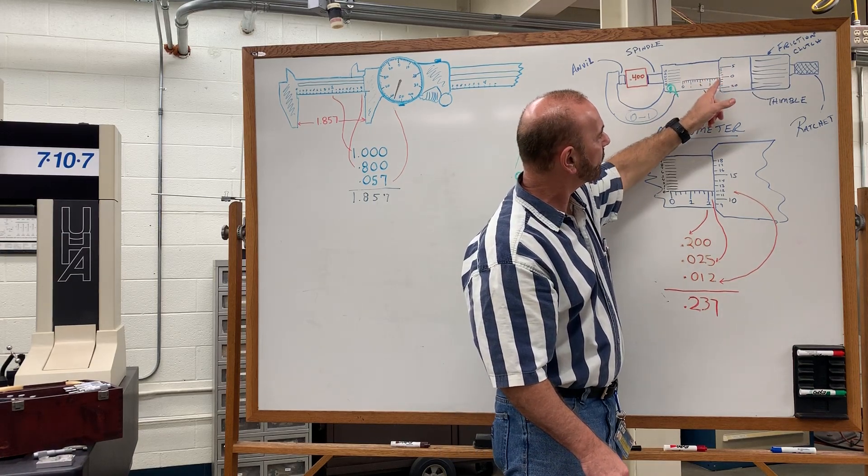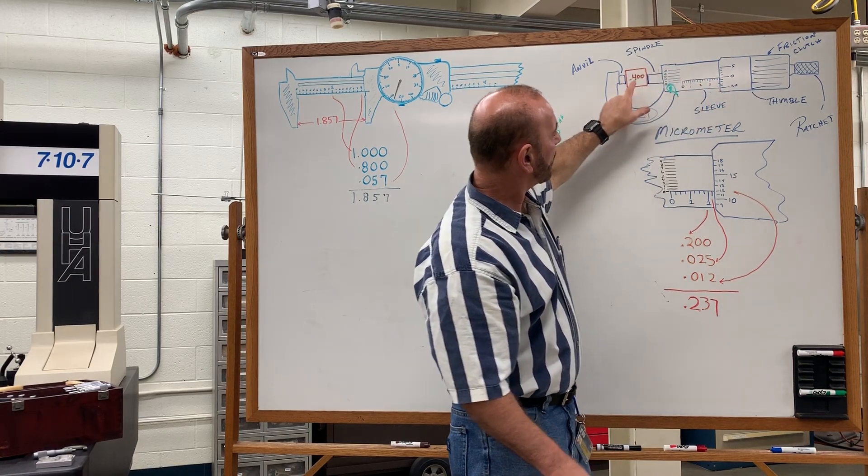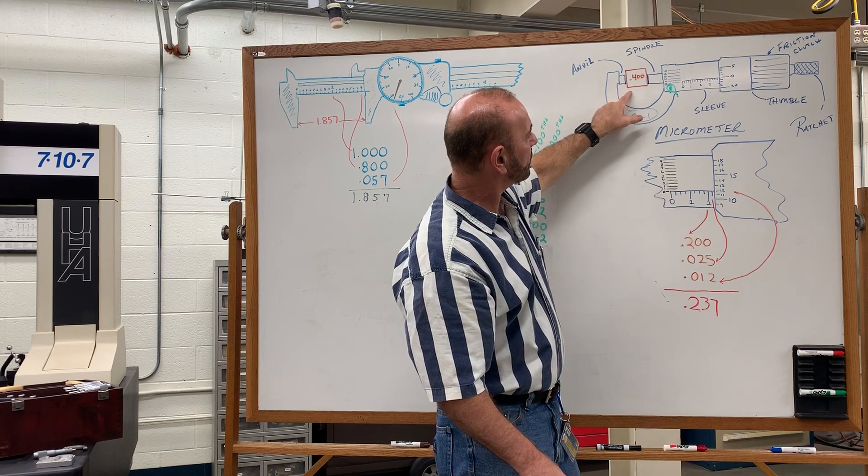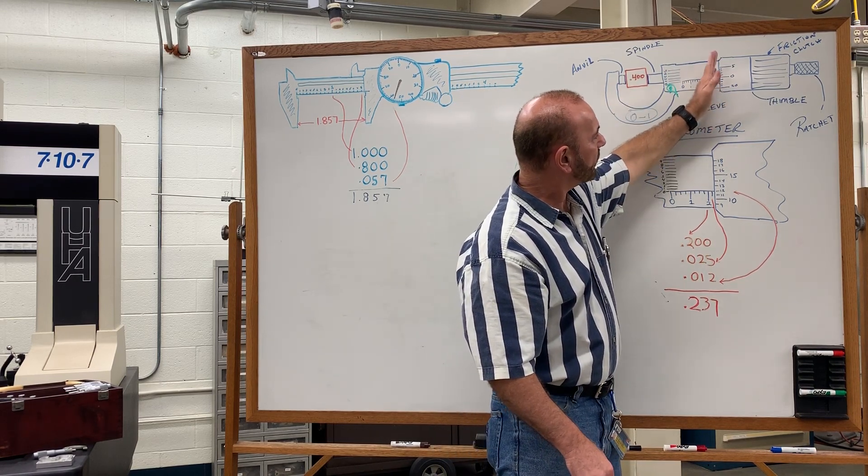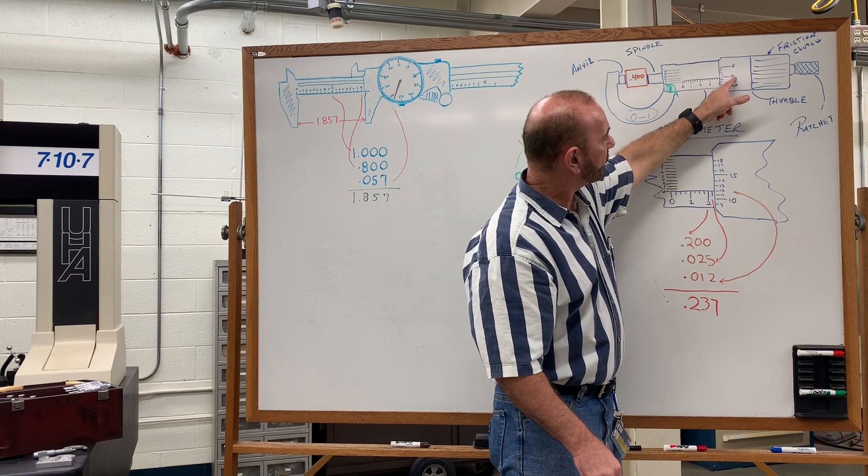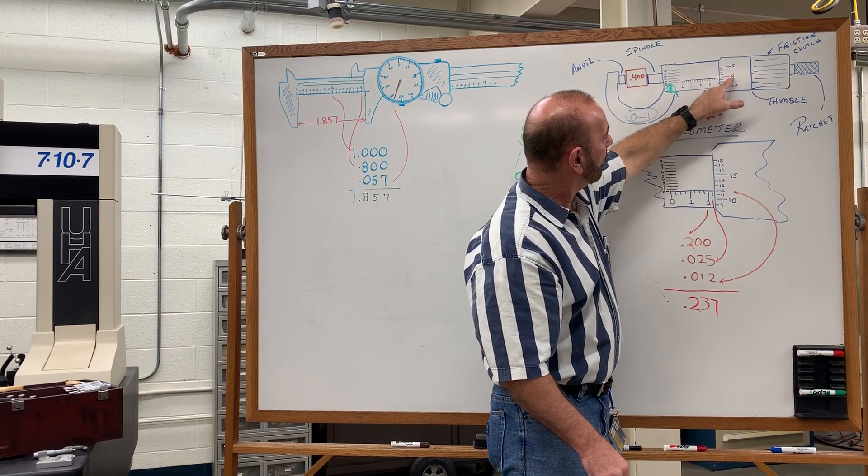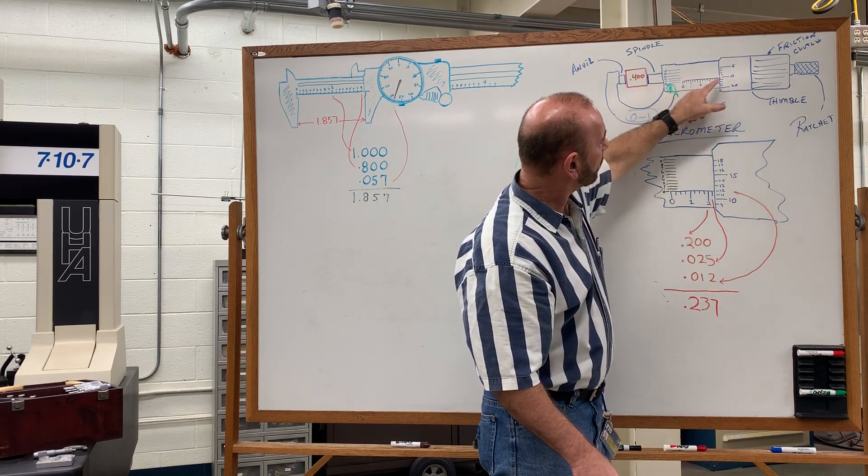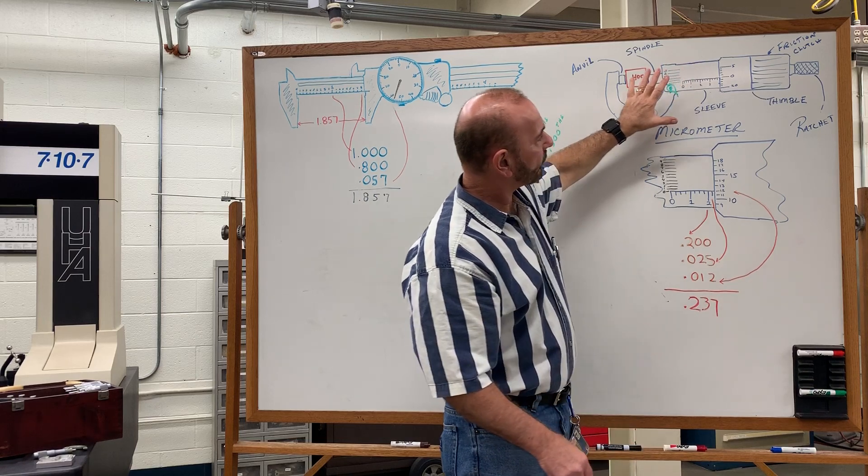One revolution of the thimble is equal to 25 thousandths. So each time we read the micrometer, we're reading to the very left edge of this thimble. Look at this example here of 400 thousandths that's being measured. The left edge of that thimble would be right over the four, and the zero on the thimble would line up with the zero on the sleeve, and that would give us a perfect 400 thousandths.